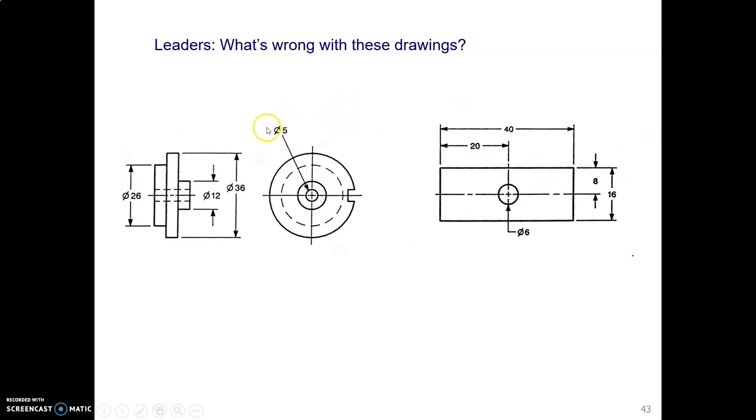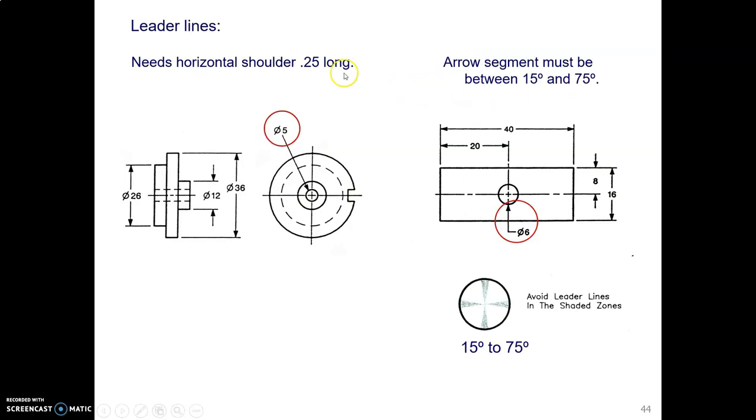Okay, now we're looking at two leaders. This one here and this one here. What's wrong with those? Well, this one on the left is missing its horizontal shoulder. This one on the right is too close to vertical. It needs to be between 15 and 75 degrees, so that it doesn't look like a component of the part.